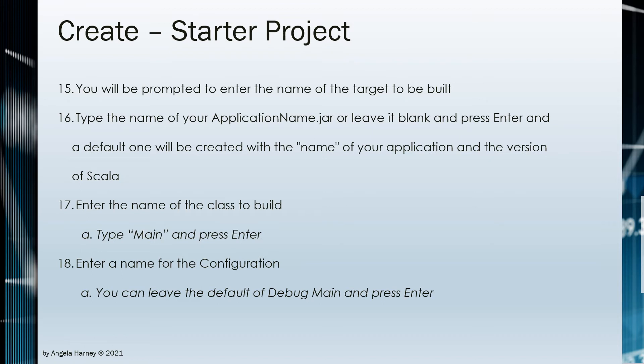You will also want to check View Problems from the menu and look at the problems window for any issues. Check the View Output window and the View Debug Console window for any issues. If there are no issues, press Control+Shift+P and select Metals Import Build from the list, then press Enter — this will manually kick off a build. You can also press Control+Shift+P, search for Metals Restart Server, and press Enter to restart the server. This is equivalent to closing and reopening VS Code, which will also restart Metals on open of a new project.